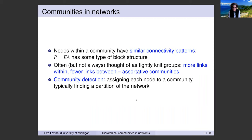There's the problem traditionally called community detection—though for statisticians, community estimation is the better name—which is the task of assigning each node to a community. Typically, in the simplest formulations, it's finding a partition, though communities can overlap. The simplest formulation is a complete partition of the network: each node goes to exactly one community and your job is to divide them.